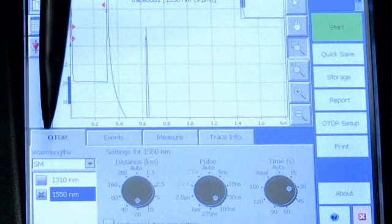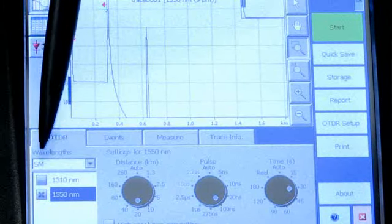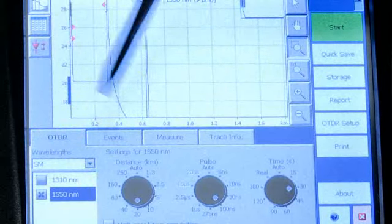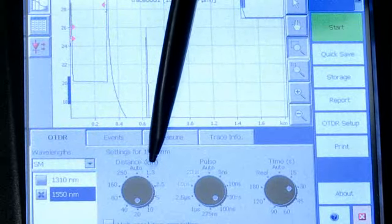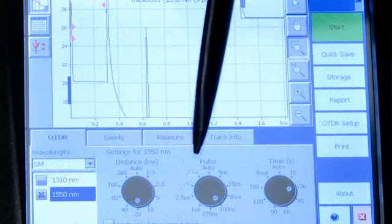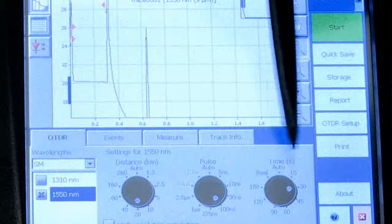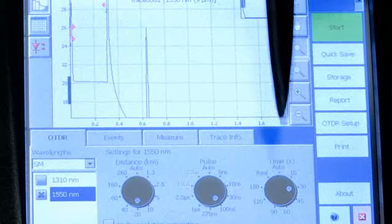In addition, you have an ability to select the type of system you're testing. In this case, it's a single mode system, and the wavelengths under which to test the system. You can also select the length of the system, and the signal power, which is selected by choosing various pulse widths, and also you can select the acquisition time.